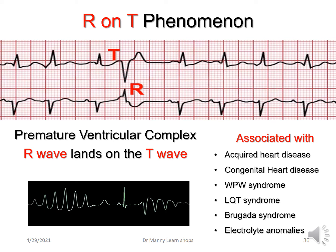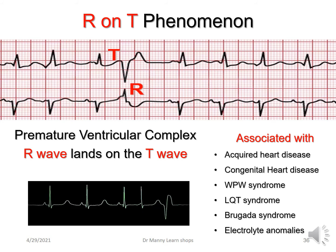This is called the R-on-T phenomenon, where the R-wave lands on the T-wave. The R-wave of the abnormal beat — the PVC — lands on the T-wave of the normal sinus beat. This can result in a life-threatening rhythm: VT — ventricular tachycardia — ventricular fibrillation, or even torsades de pointes. It's typically associated with acquired heart disease, congenital heart disease, Wolf-Parkinson-White syndrome, Long QT syndrome, Brugada syndrome, or electrolyte anomalies, especially hypomagnesemia.